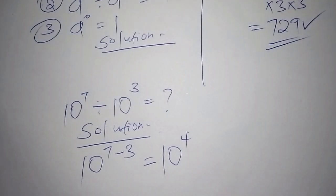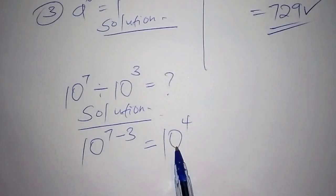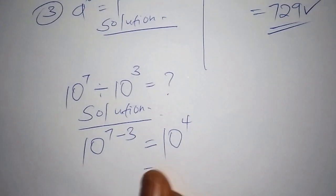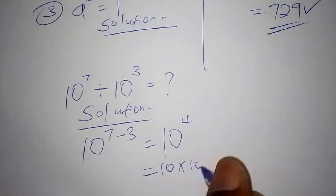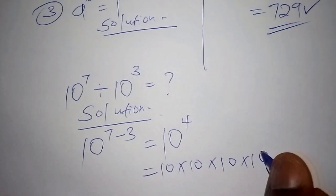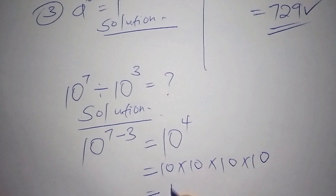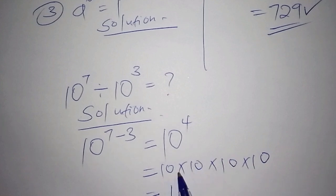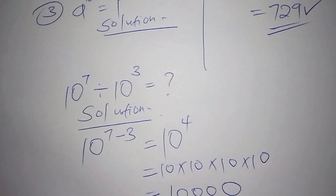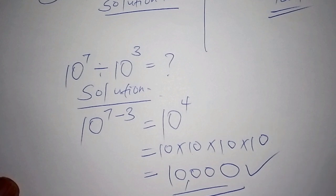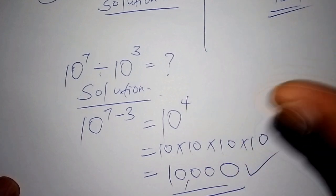10 to the power of 4 means multiplying 10 four times: 10 × 10 × 10 × 10. That gives us 1 followed by four zeros, so our correct answer is 10,000. If you find this video helpful, please remember to subscribe and share. Keep in touch and let's meet in the next video — thank you.